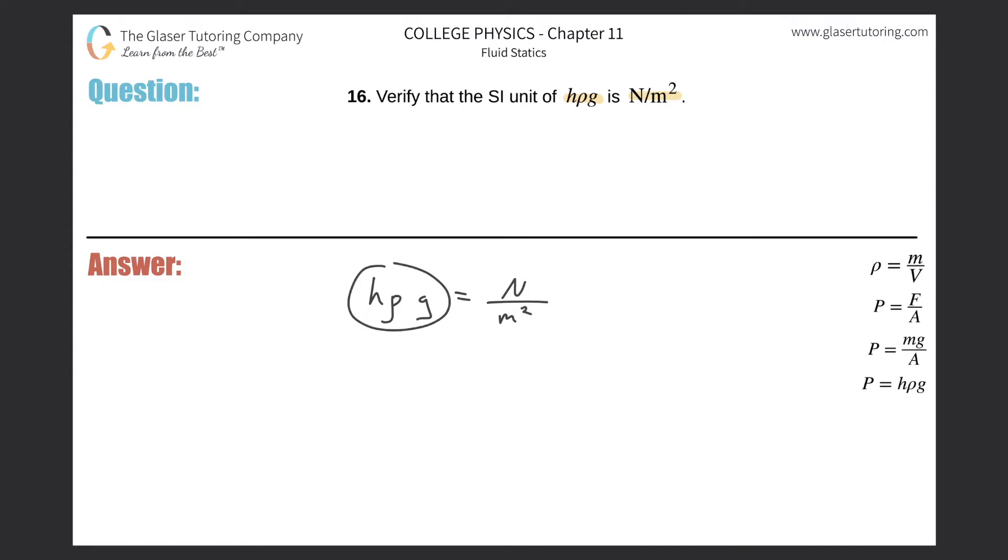So let's expand on each of these. We know height is represented in meters. We know the density is going to be represented in kilogram per cubic meter. And we know gravity is meter per second squared. That's the acceleration due to gravity.